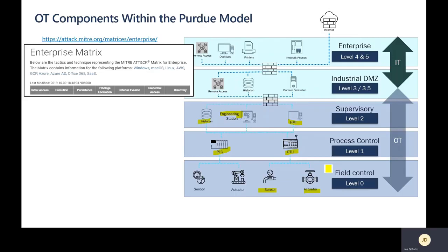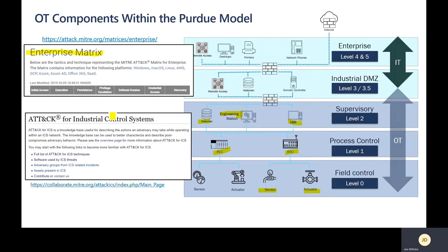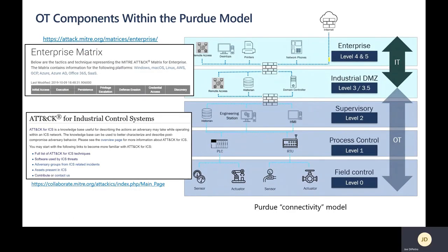Another way to look at this is from a MITRE ATT&CK perspective for industrial control systems. Here's the landing page if you're interested in more detail on the MITRE ATT&CK framework — so you can understand how different components could be compromised, whether an HMI, engineering workstation, PLC, or sensor. Keep in mind that the Purdue model is more of a connectivity model showing where components fit — sensors at level zero, PLCs at level one, HMIs and engineering workstations at level two — while the MITRE ATT&CK framework is a security framework showing how systems might be compromised.